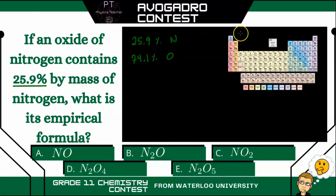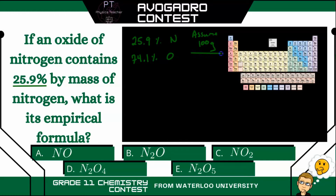Now what we're going to do is assume that we have a total amount of 100 grams of this oxide of nitrogen compound. This will make the math a little easier, and it doesn't matter whether or not you assume 100 grams or 200 grams, because the ratios will all give you the same answer anyways.